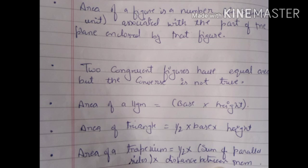Congruent figures have equal areas, but the converse is not necessarily true. That is, figures with equal areas are not necessarily congruent.